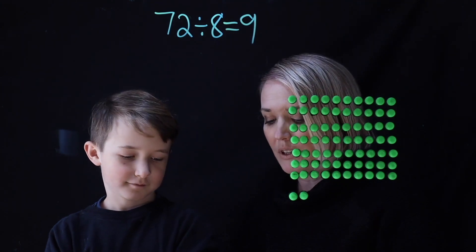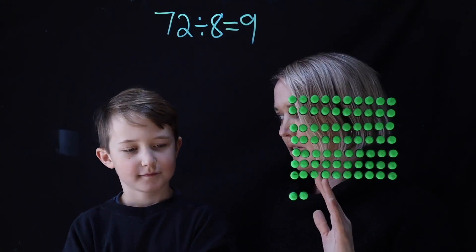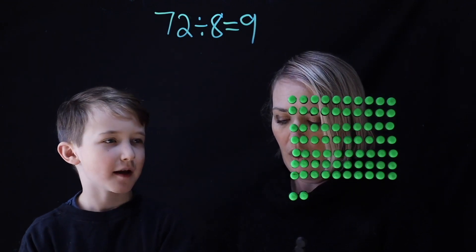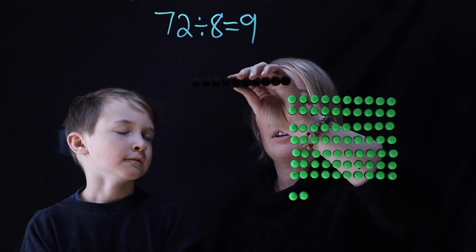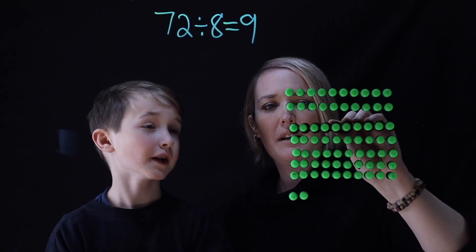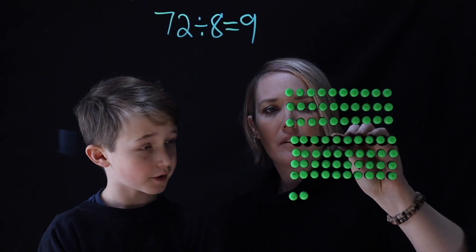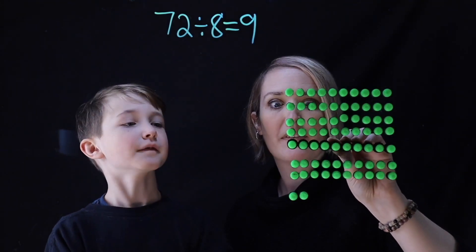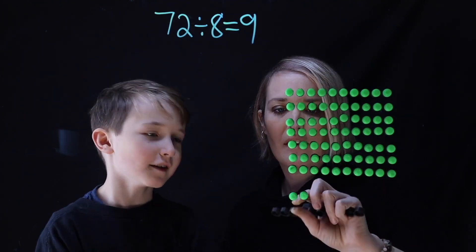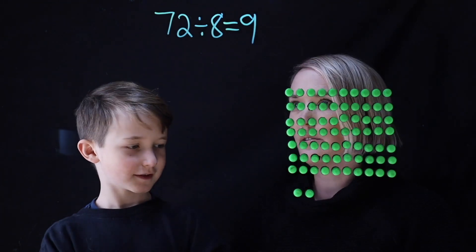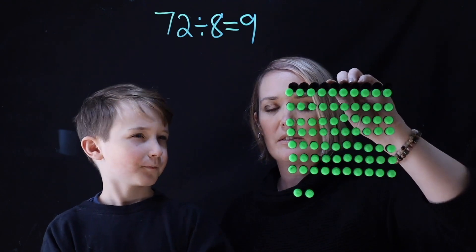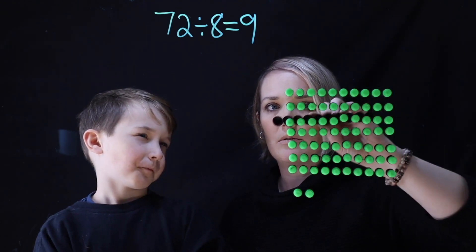So that's pretty quick, but let's show them what it looks like and show them that you're actually splitting it into 8 equal groups. So the first one — I've got 72 things here: 10, 20, 30, 40, 50, 60, 70, and then 2 more. Okay, so 72 divided by 2 — first let's split this into two equal groups.